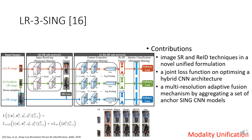The third work is Deep Low-Resolution Person Re-Identification in AAAI 2018. The method consists of a super-resolution network and a re-ID network. Low-resolution images and down-sampled low-resolution images are enlarged by the super-resolution network, and then two kinds of output — super-resolution images and original high-resolution images — are input into the re-ID network. The network is trained end-to-end with a joint loss function. The key strategy is unifying the modality to high-resolution and matching images in high-resolution space.